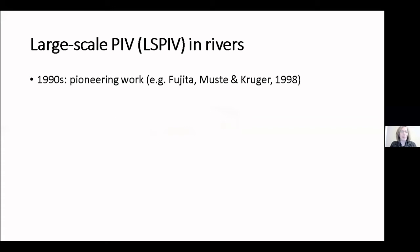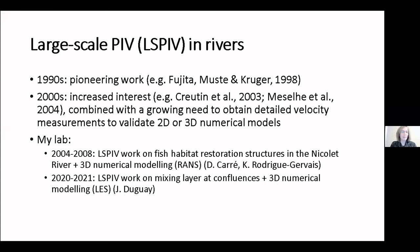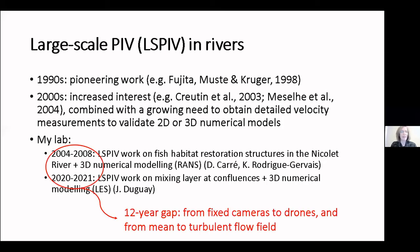A quick recap of LSPIV — pretty much everyone on this call knows about the pioneering work in the 1990s by Fujita and collaborators, and then the really increased interest in the 2000s. In my case, it was certainly to validate 2D or 3D numerical models. In my lab, a lot of work was done between 2004 and 2008, mainly on fish habitat restoration structures, validating 3D numerical modeling with RANS models. Then there was a 12-year gap, and it's only recently with Jason Dugay that the work focused mainly on turbulent flow structures.